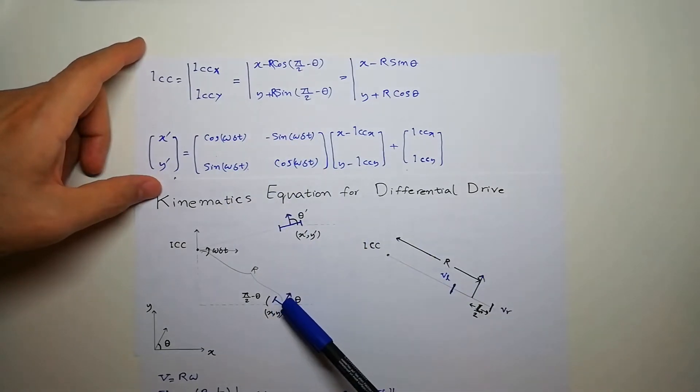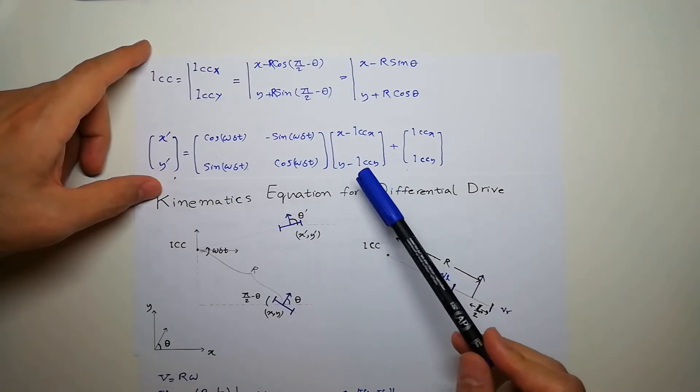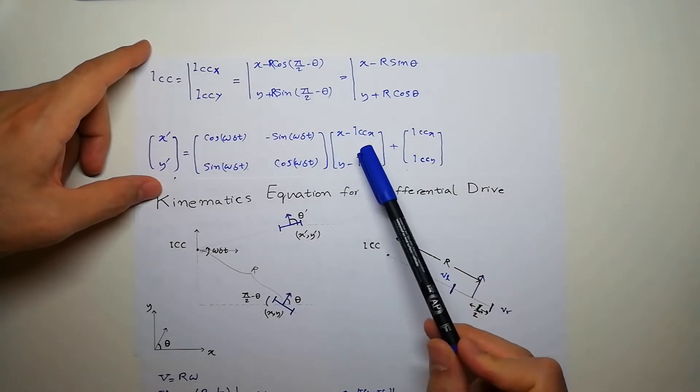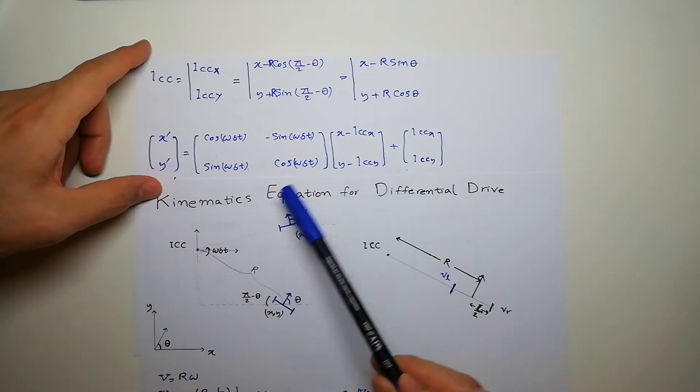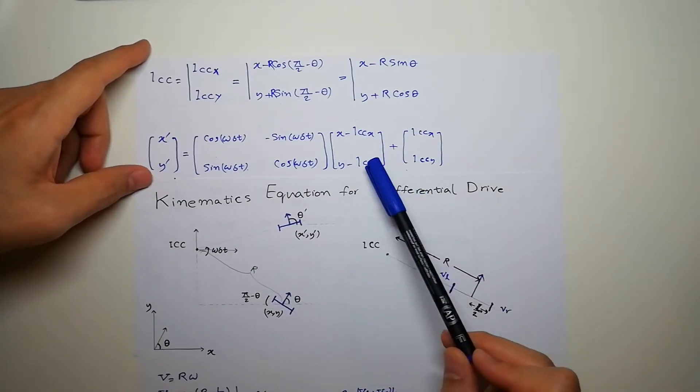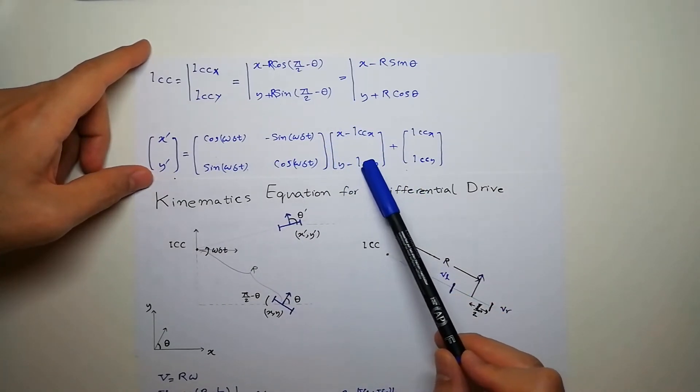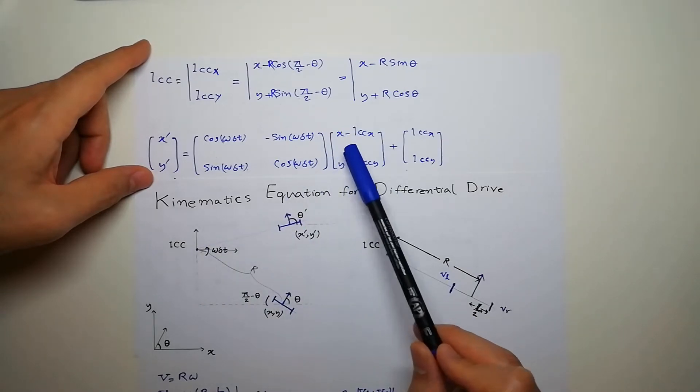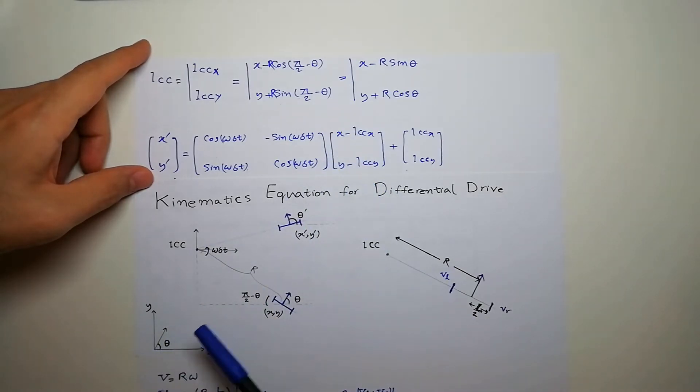So we are rotating this point in this frame and we have to write the pose of the robot in the ICC frame which is going to be X and Y minus X and Y of ICC. So this is the pose of the robot in the ICC. So this is the pose of the robot in the world coordinate system.